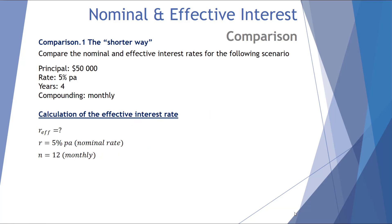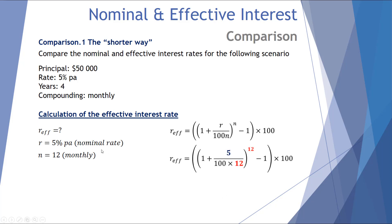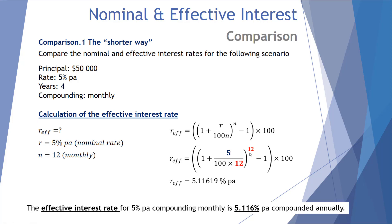There's an equation that directly converts a nominal interest rate to an effective interest rate. We place in the nominal interest rate of 5% calculated monthly, N becomes 12 in both positions. Again, the effective rate for 5% per annum compounding monthly is 5.116% per annum compounded annually.